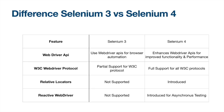Let's see the key differences between Selenium 3 and Selenium 4. The first is the WebDriver API. In Selenium 3, the WebDriver API was used for browser automation, but in Selenium 4 they have enhanced the WebDriver APIs to provide more functionality and improved performance.